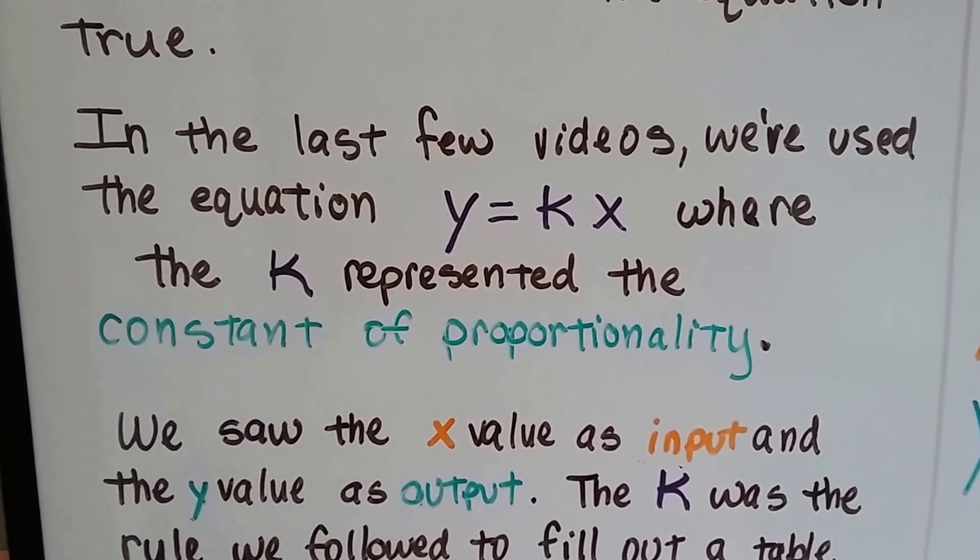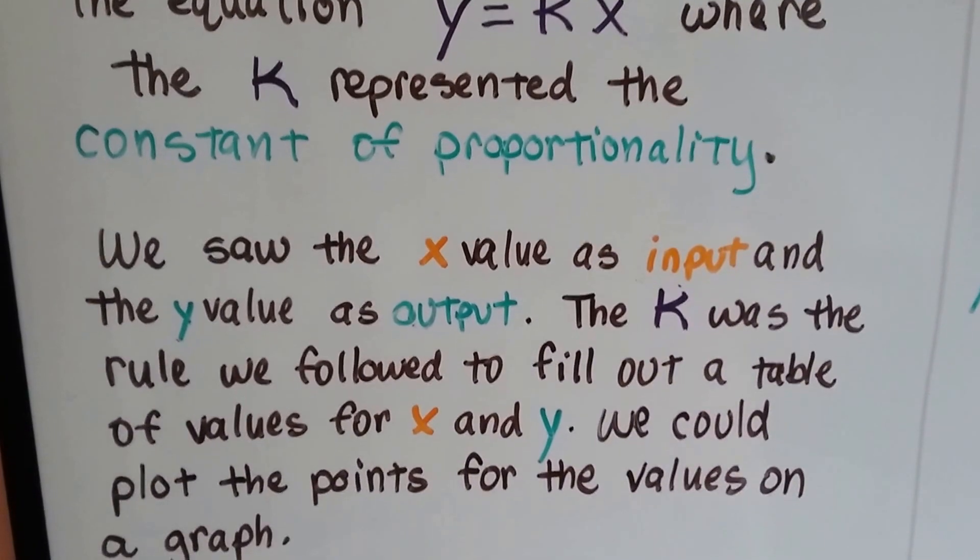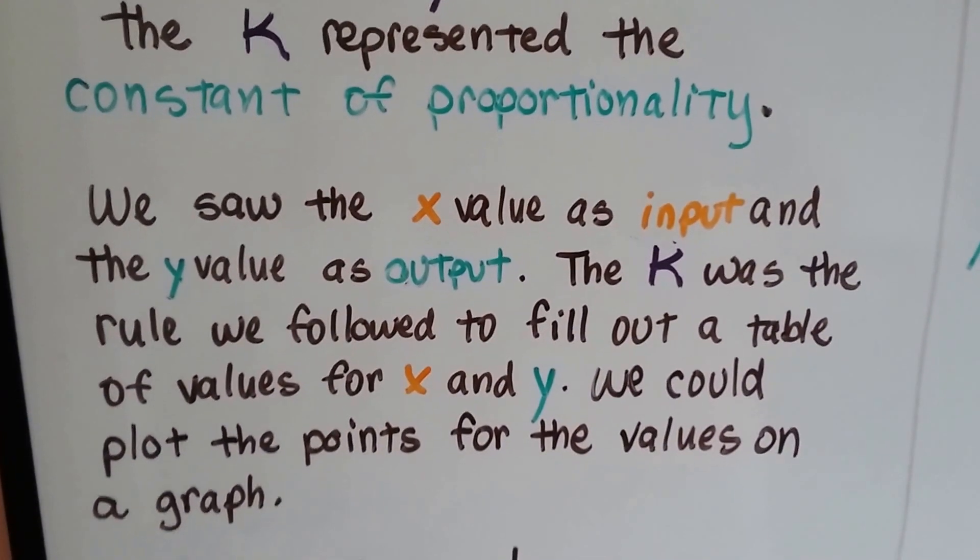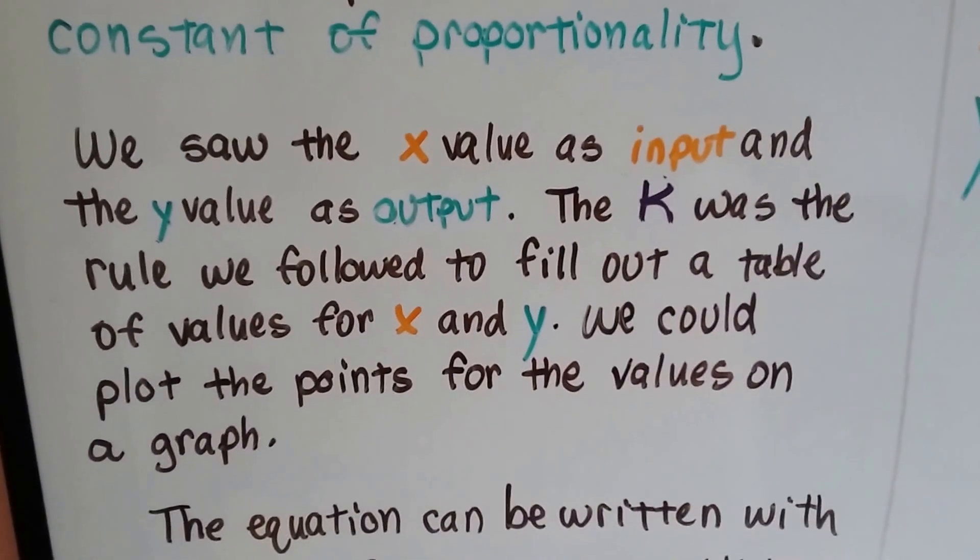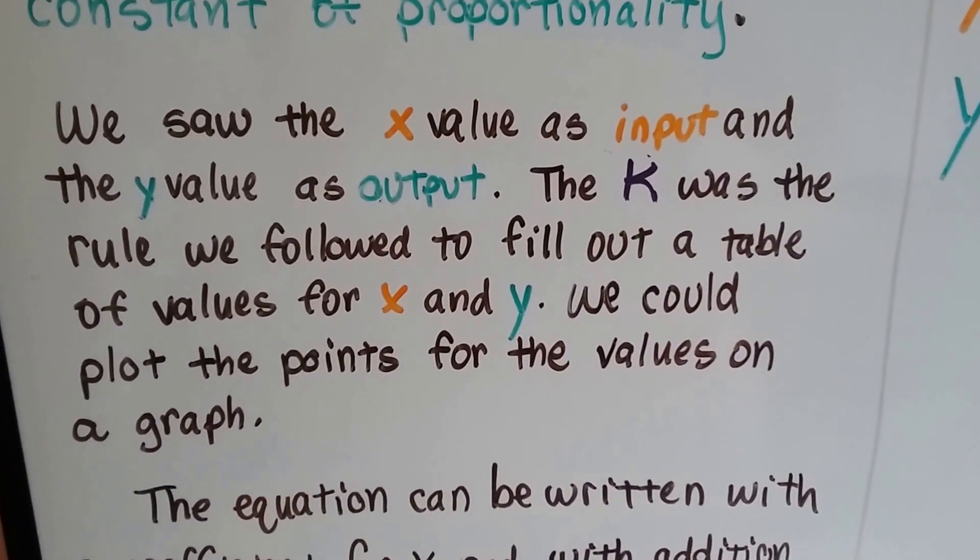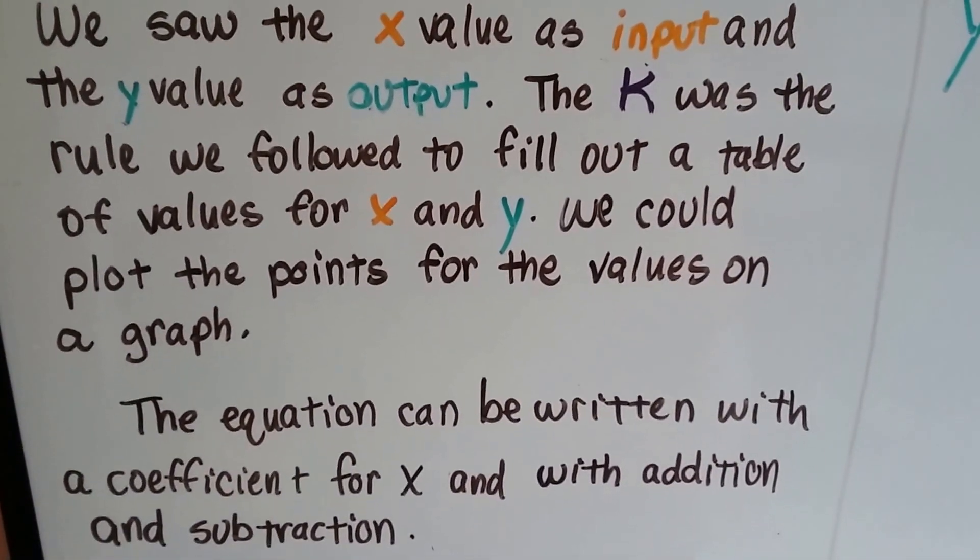That constant unmoving ratio. We saw the x value as input and the y value as output, and k was the rule we followed to fill out a table of values for x and y, and we can plot the points for the values on a graph.